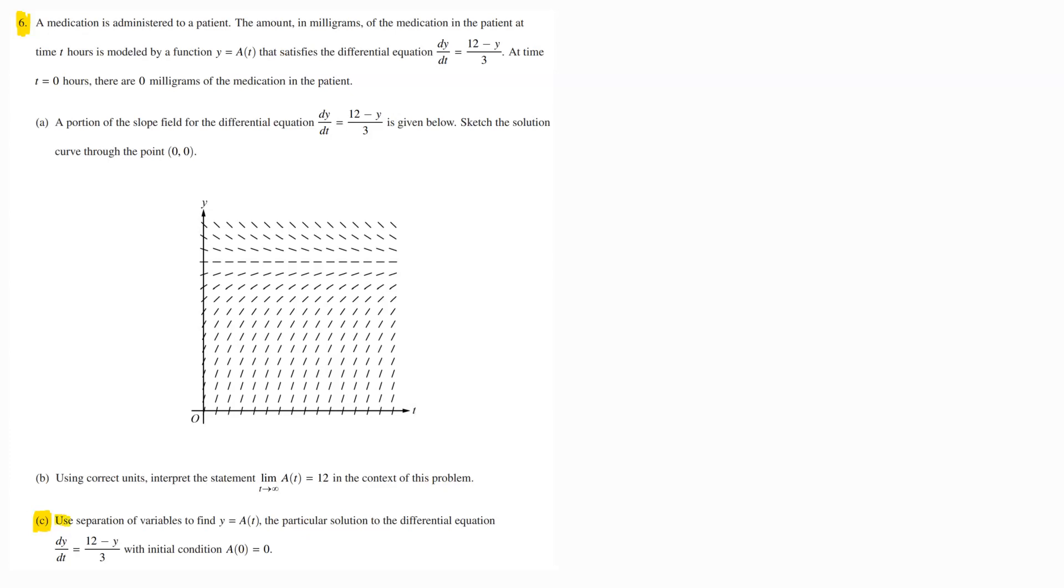It's always nice when they tell us what to do. They're saying use separation of variables to find out what this original equation was. And they want the particular solution, which is their fancy way of saying go find out what the plus C value is. They call this a differential equation. It's just a fancy way of saying the derivative. And this is our initial condition that we'll use to find our plus C value. So really, this is just a big integral problem. It's kind of two integrals in one. So we'll start off up here. We get dy/dt = (12 - y)/3.